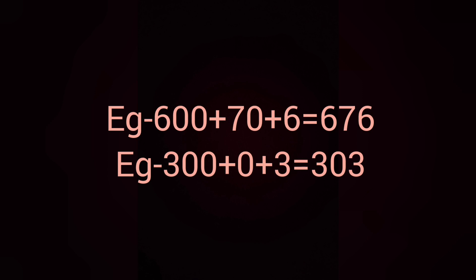Next, let us learn to write the short form of a given number. When expanded form numbers are added, we get the short form. Example: 600 plus 70 plus 6 is in expanded form, and if we have to write in short form, we will write it as 676. In example 2, 300 plus 0 plus 3 is given in expanded form. If we have to write in short form, we write 0 at the tens place, and 3 at the ones place, so in short form we will write it as 303.